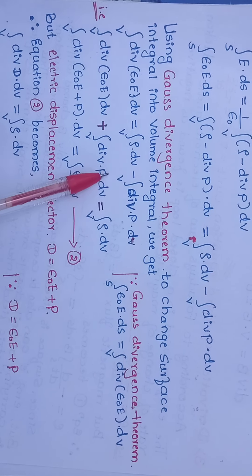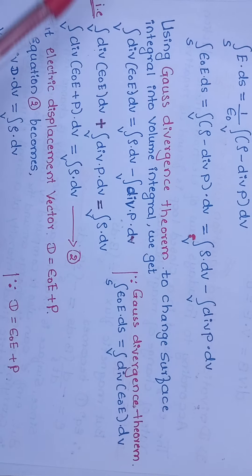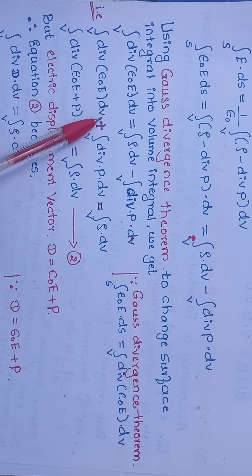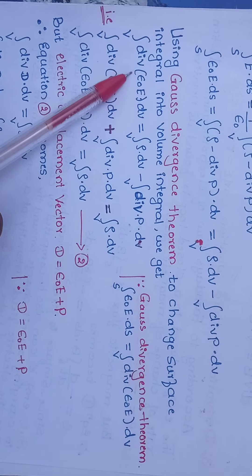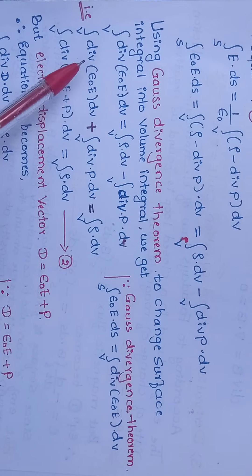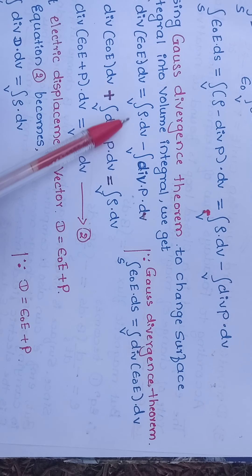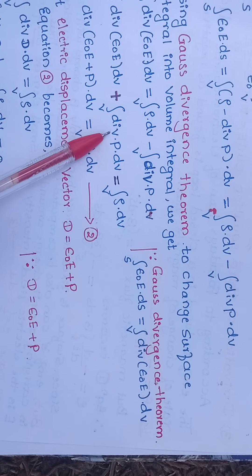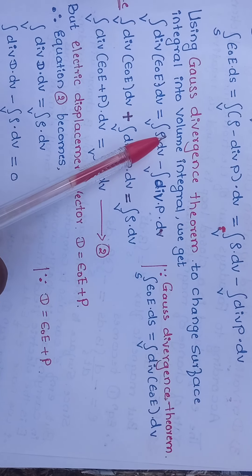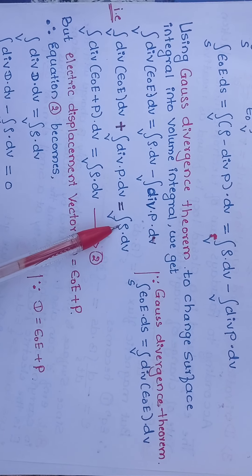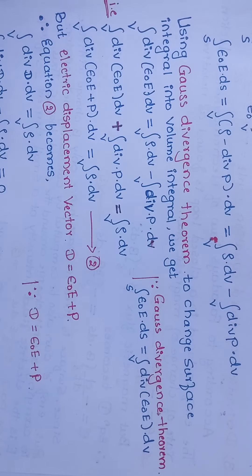Taking the minus volume integral of divergence of P to the left-hand side, it becomes plus. So the volume integral of divergence of (ε₀·E) dv plus the volume integral of divergence of P dv equals the volume integral of ρ dv. Since the volume integral of dv is common, we take it outside.